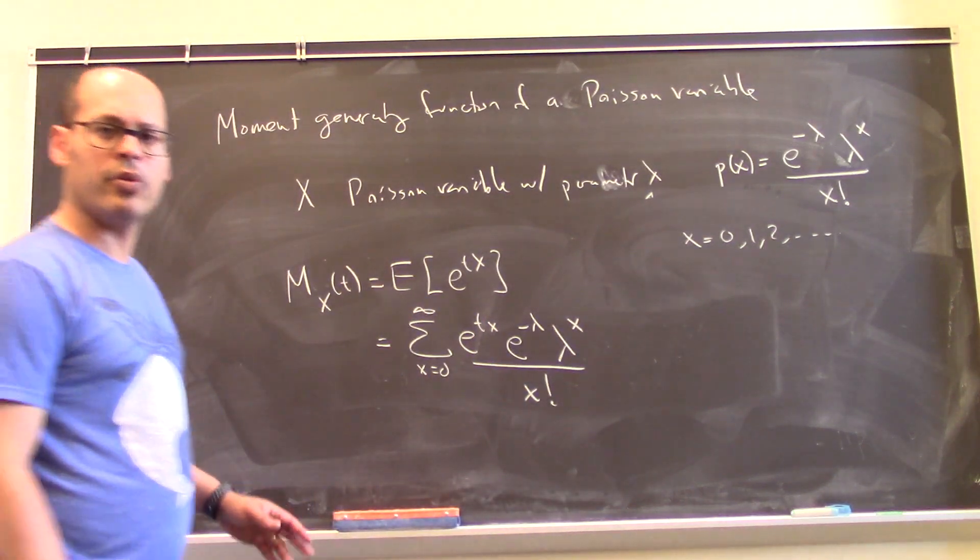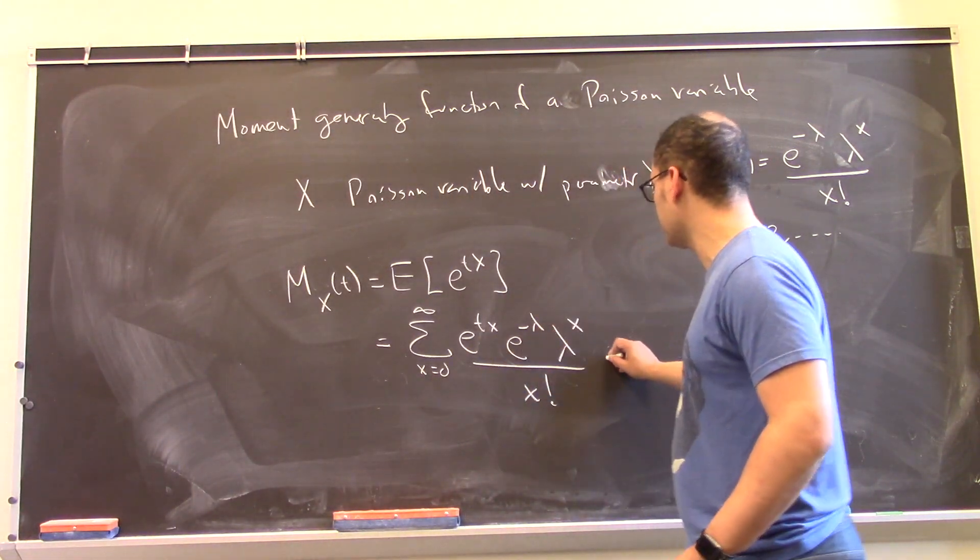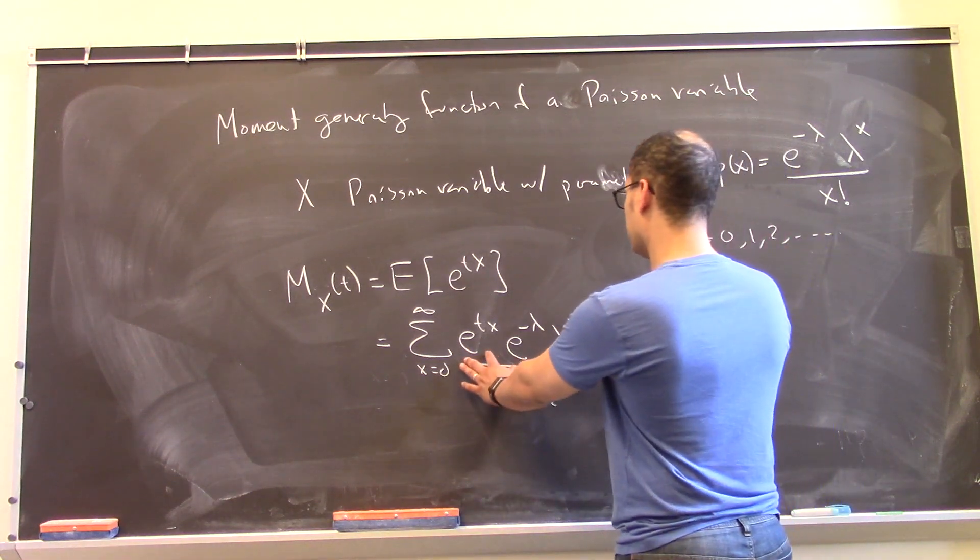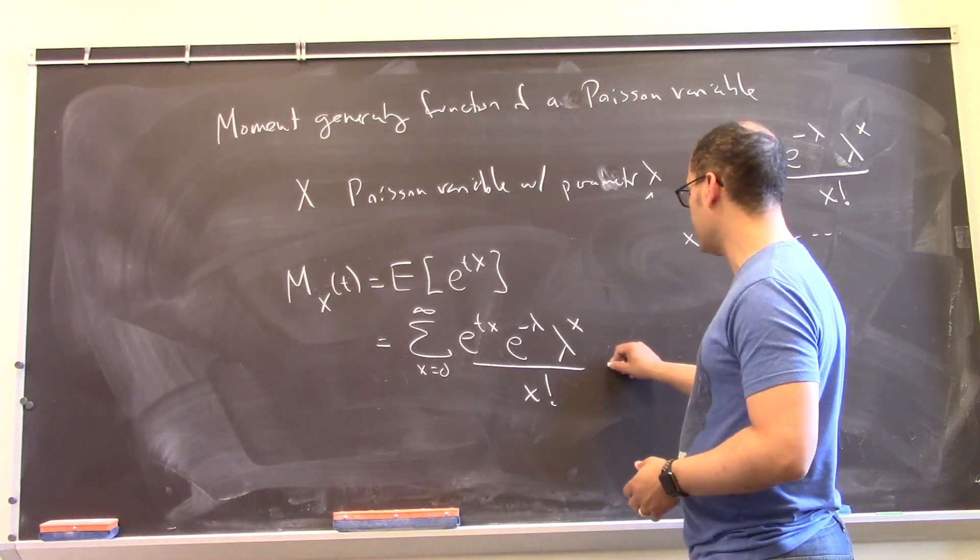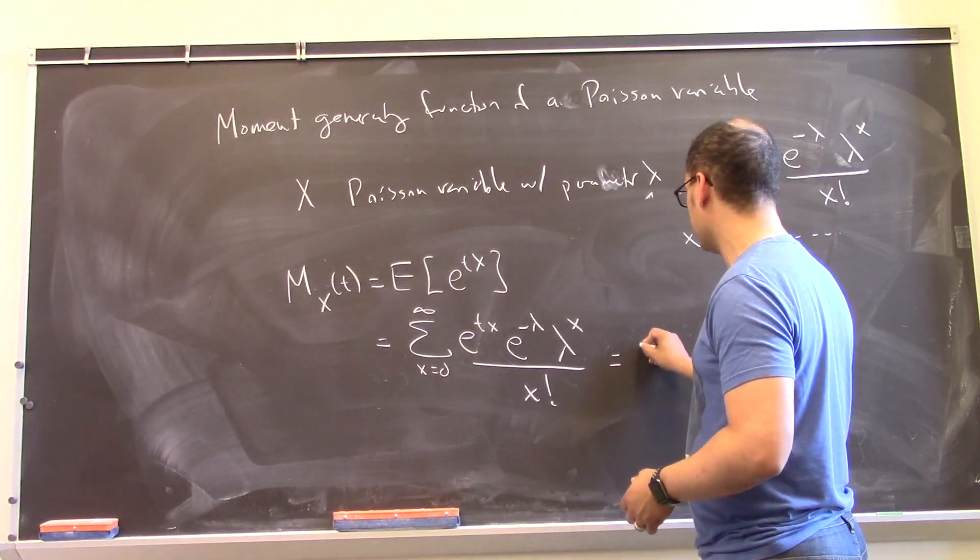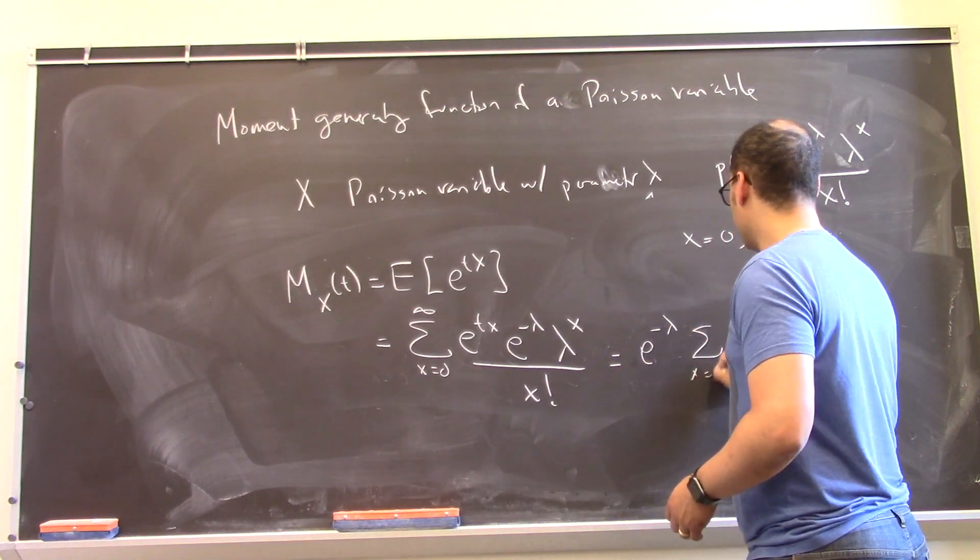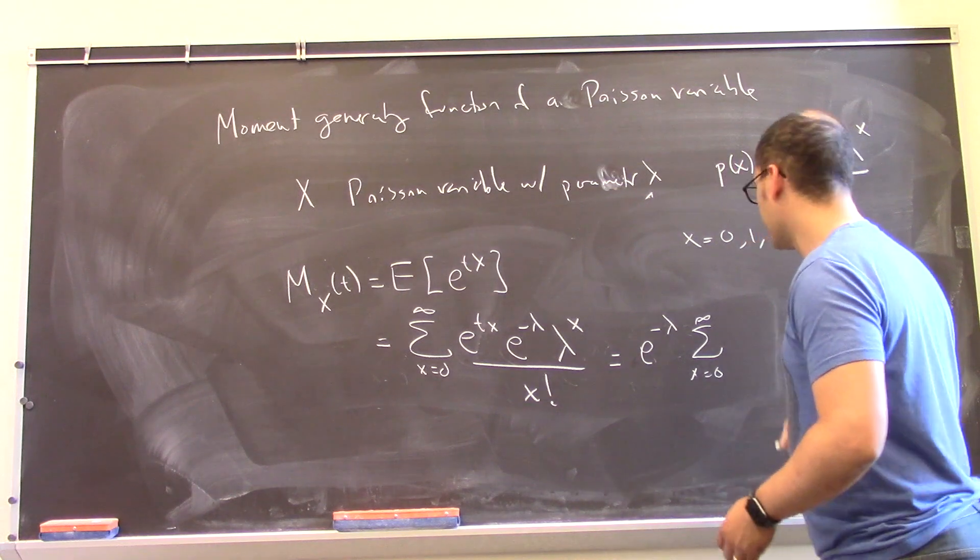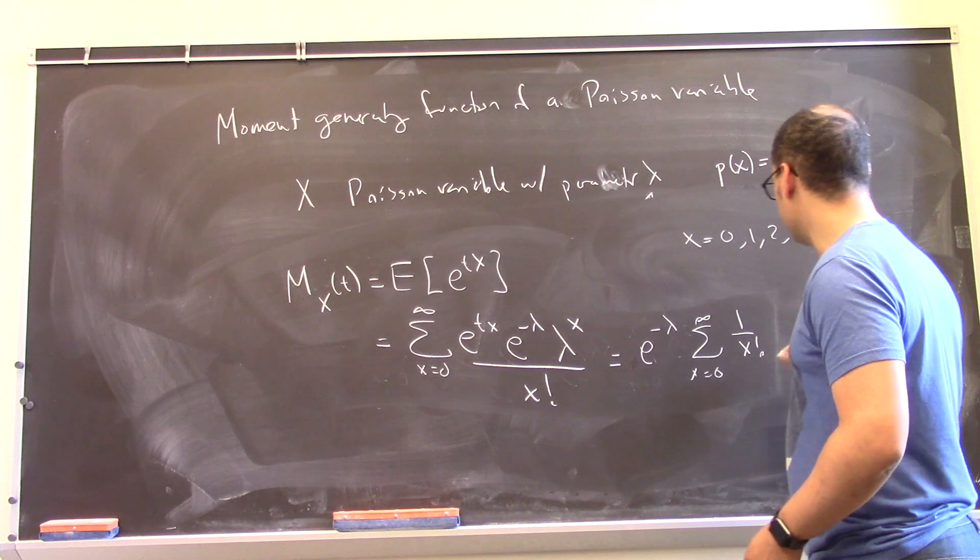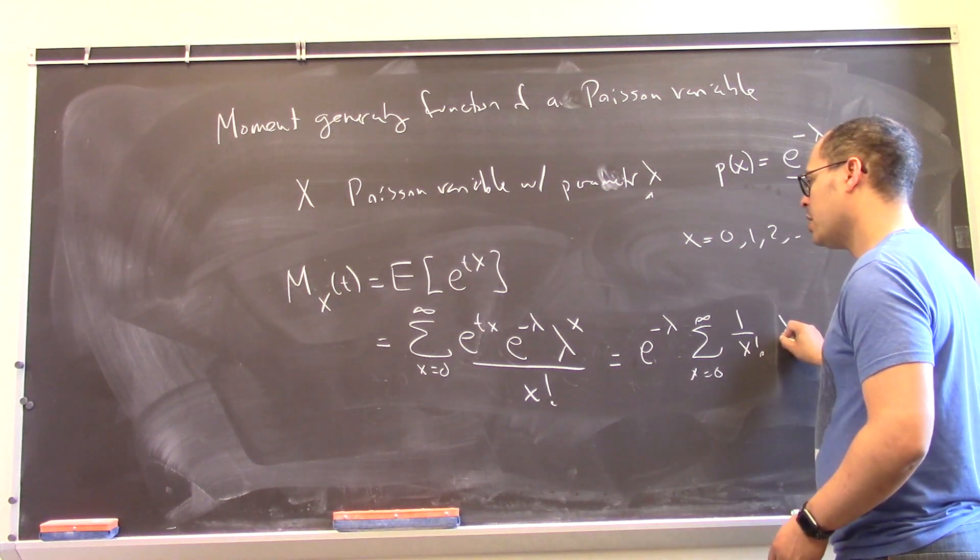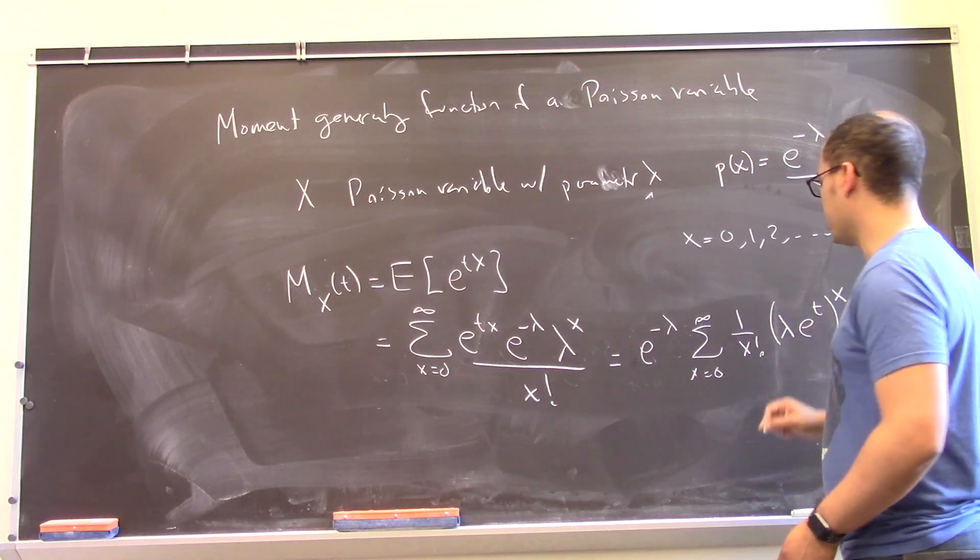Okay, well, we can write this a little bit better by pulling out this e to the minus lambda term, which is a constant. And also, we notice that these two terms both look like something with x in the exponent, so I'm going to kind of gather those things together too. So this looks like e to the minus lambda, sum x is 0 to infinity. Let's say I have a 1 over x factorial, and then the other terms, I have a lambda, I have an e to the t, and all that to the power x.